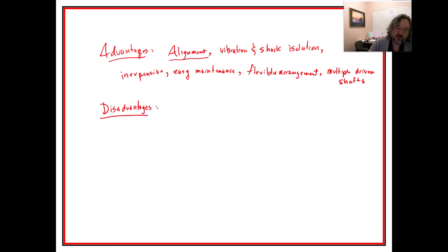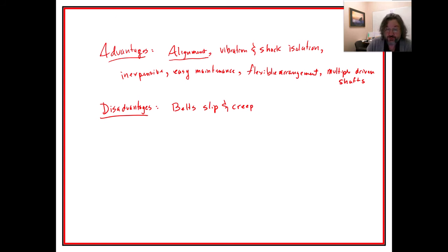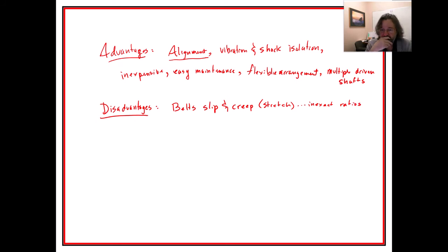Some important disadvantages though: belts slip. There's a certain amount of slip and creep — over time they get longer, they get looser, essentially they stretch. Because of that you get inexact ratios; you won't get that perfect conjugate action. You've probably heard fan belts slipping — that screeching sound when an engine starts up is usually a loose fan belt squeaking loudly.